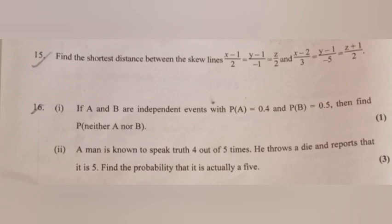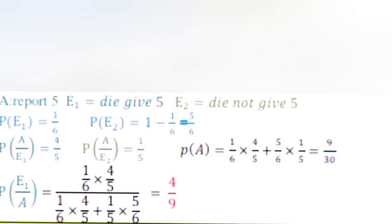Question 16.2: A man speaks truth 4 out of 5 times. He throws a die and reports it is 5. Find the probability it is actually 5. Let E1 = die gives 5, E2 = die does not give 5. P(E1) = 1/6, P(E2) = 5/6. P(A|E1) = 4/5, P(A|E2) = 1/5. P(A) = (1/6)(4/5) + (5/6)(1/5) = 9/30. P(E1|A) = (1/6 × 4/5) / (9/30) = 4/9.